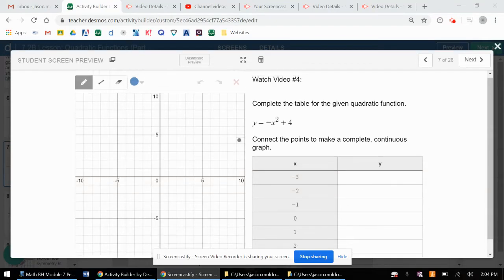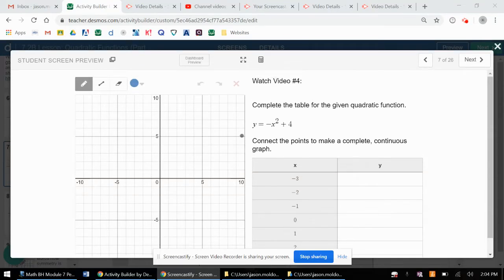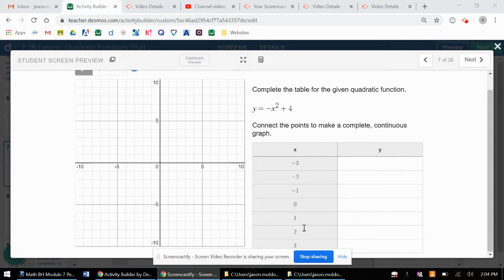This is the fourth video for the 7-2b lesson. We're going to now look at a quadratic that has shifts in it, which is y equals negative x squared plus 4. We're going to input some values and sketch this one and see how it compares to the previous one, the parent function.